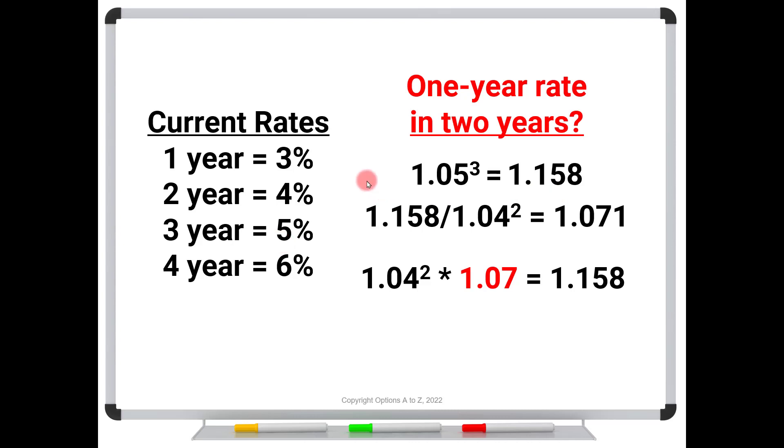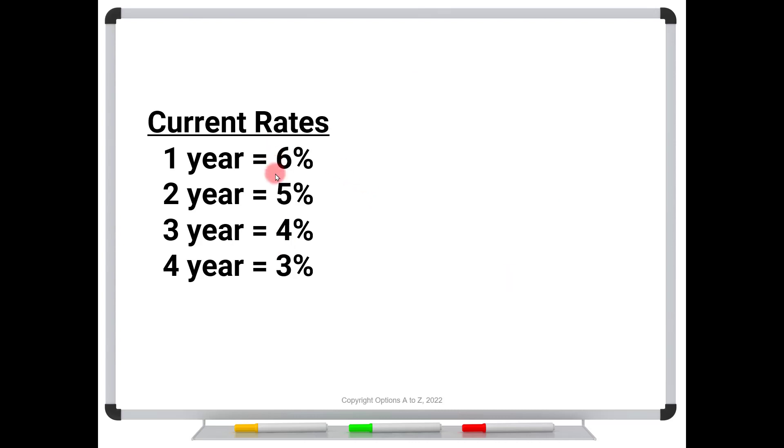Now, once you understand this math, we can work it for any combinations. What if we have falling rates? If you see these four rates in the market, what is the one-year rate in one year? Well, we do the same thing. I could take the two-year rate. I could go into my bank and say, I want this two-year CD for 5% per year. I would end up with 1.1025, or just a touch over 10% after two years. But I could also take that rate and divide it by 1.06, and that gives me 1.04.